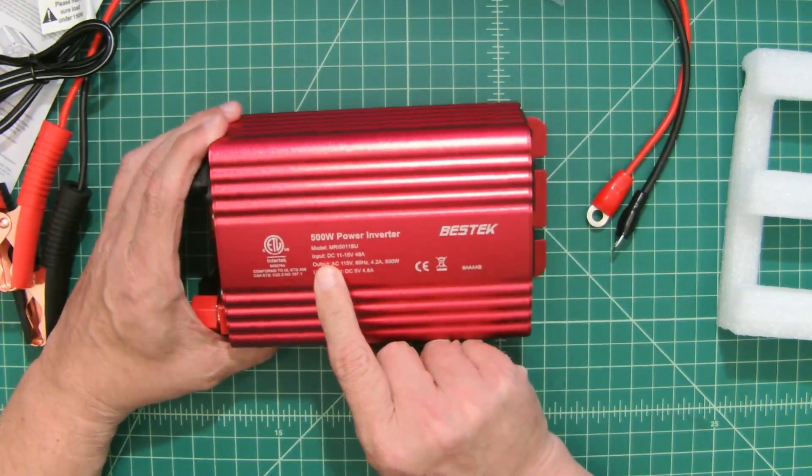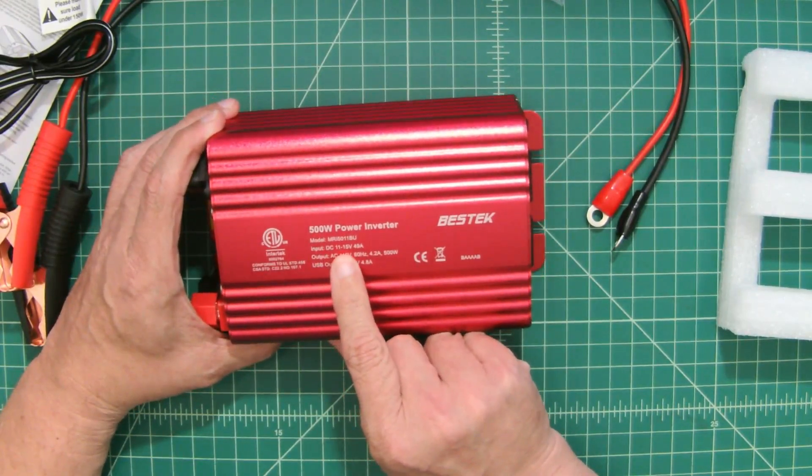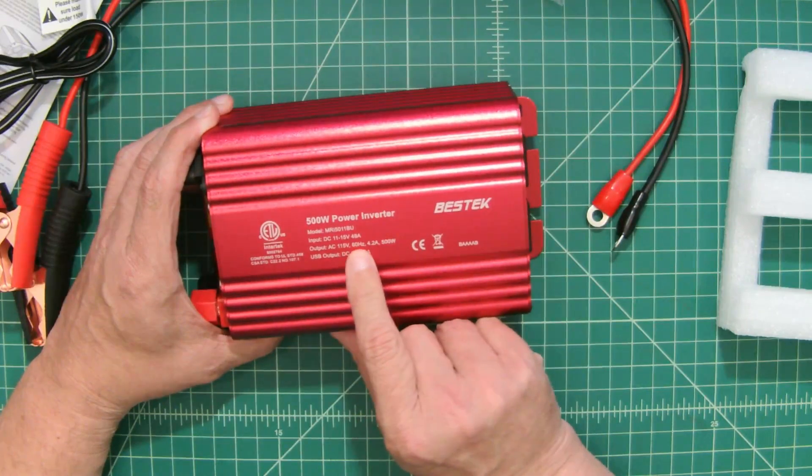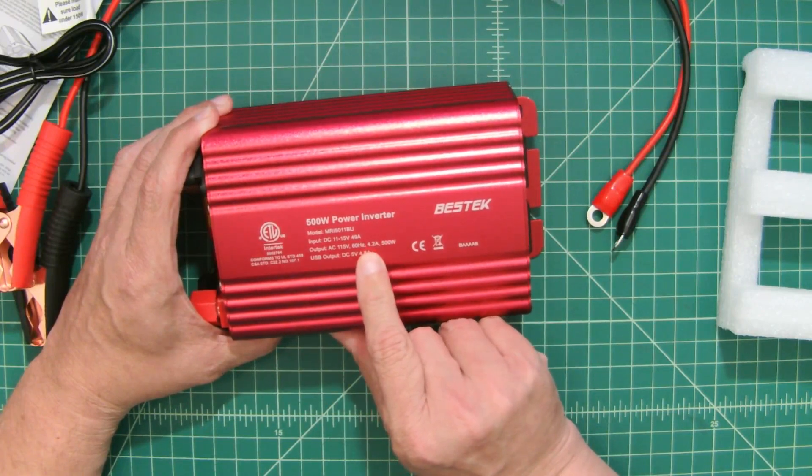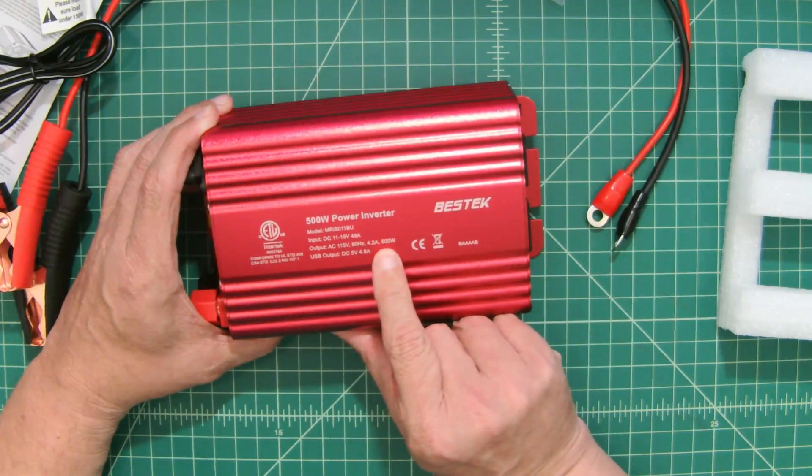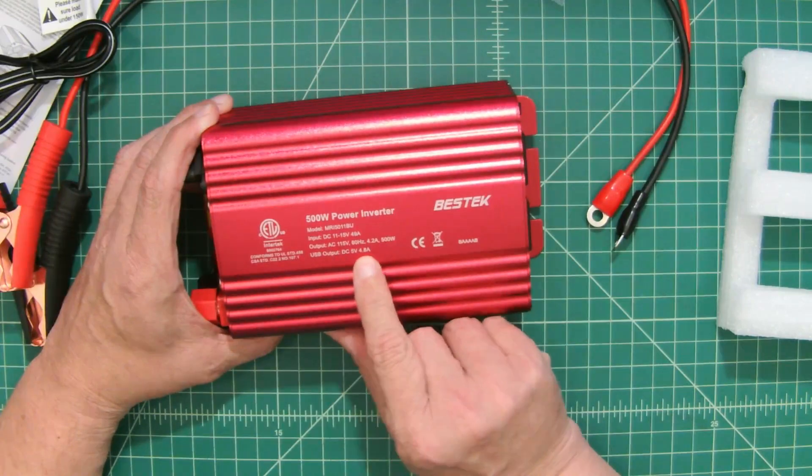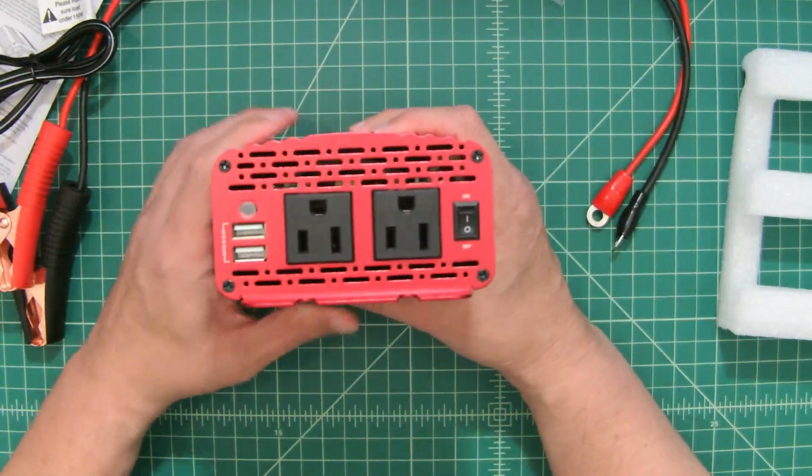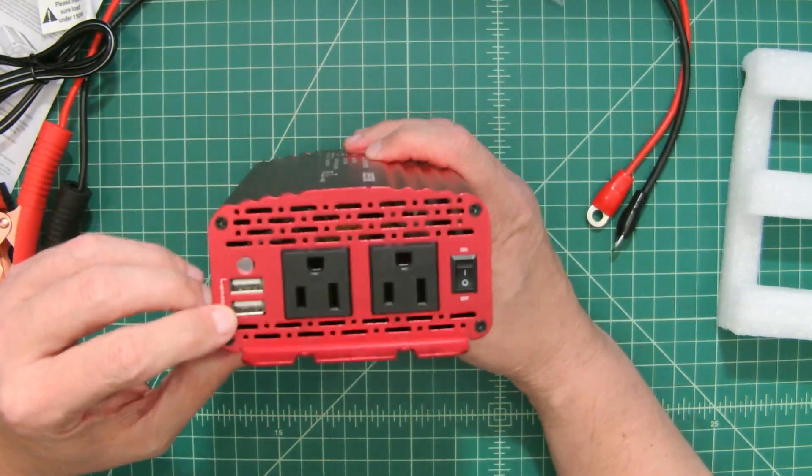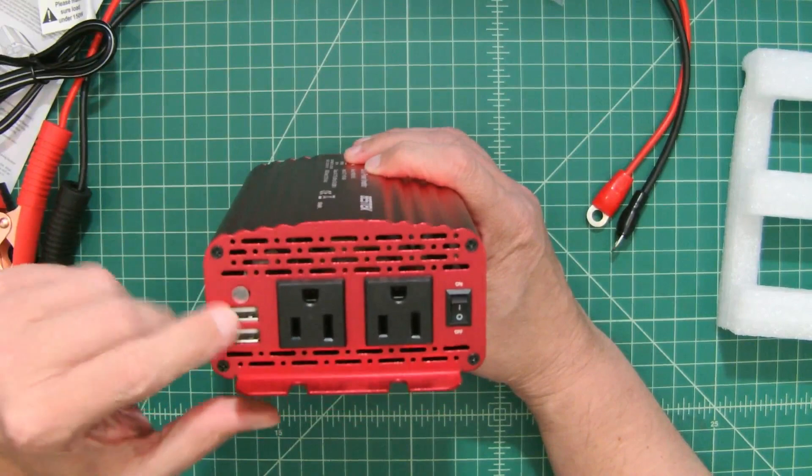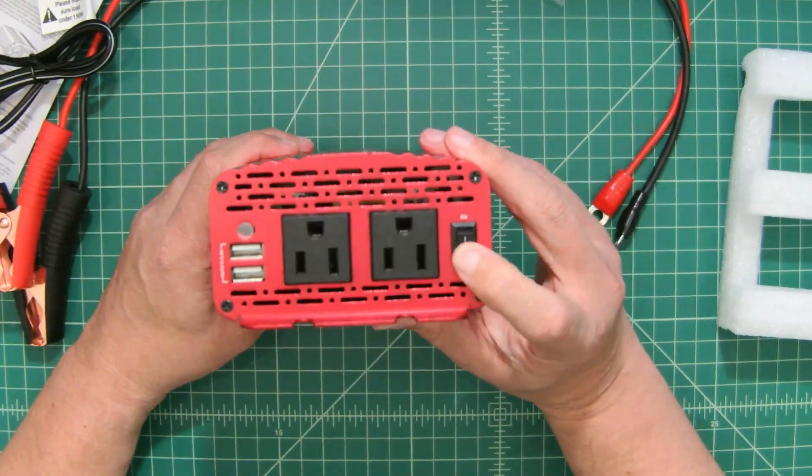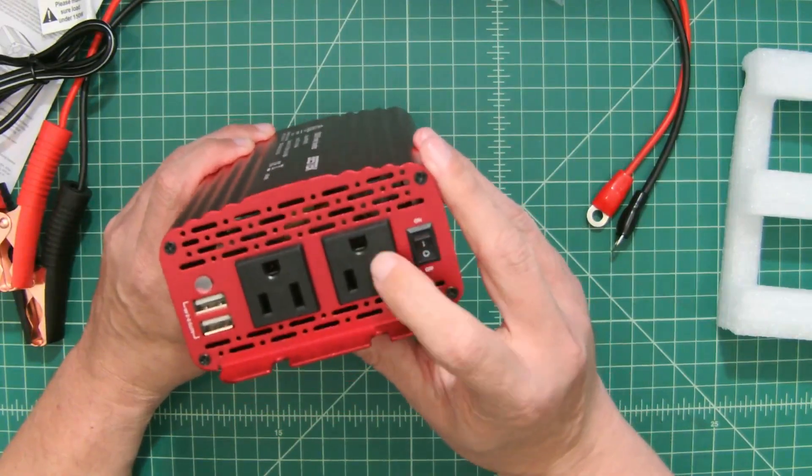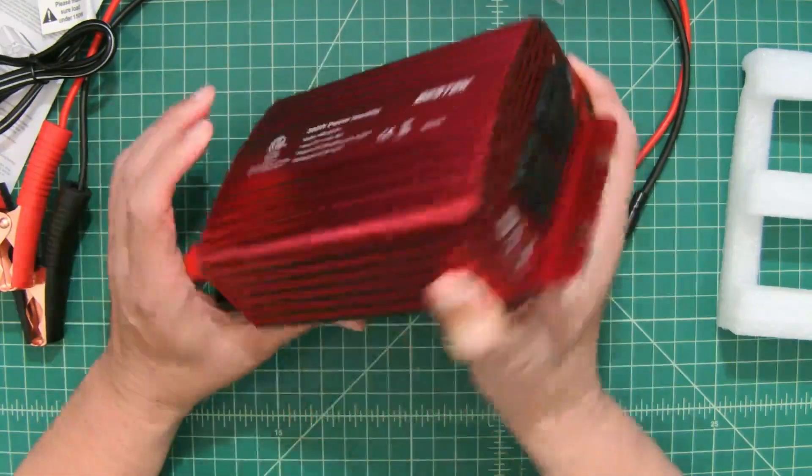This thing is pretty small, but it says on here 500 watt power inverter. We have a model number and input is DC 11 to 15 volts, 49 amps. Output AC is 115 volts, 60 hertz, 4.2 amps and 500 watts. USB output DC 5 volts, 4.8 amps. Let's just take a quick look at the output. So this would be your USB output. I guess this is a light or something that lights when this is in use. We have an on off switch, which is pretty handy. And then we have our two 110 outlets. These look like they're upside down to me, but you know, what do I know?